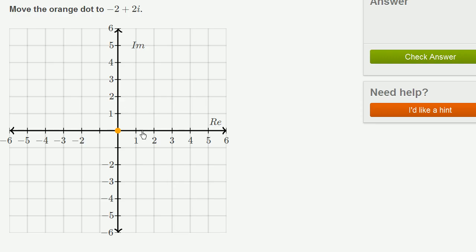In our traditional coordinate axes, you're plotting a real x value versus a real y coordinate. Here, on the horizontal axis, that's going to be the real part of our complex number.